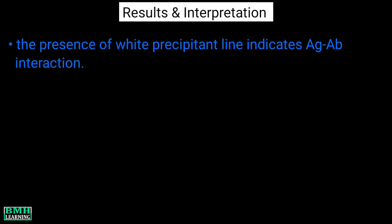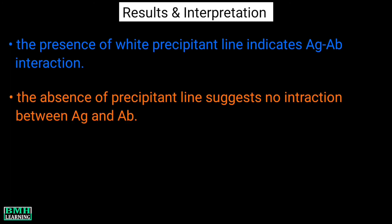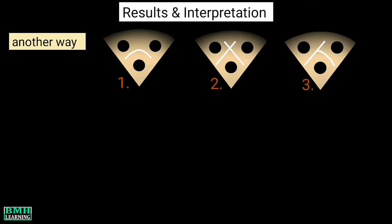Now let's talk about the results and interpretation. The presence of a white precipitant line indicates antigen-antibody interaction, and the absence of a precipitant line suggests no interaction between antigen and antibody. The more productive way to analyze the result is in the following patterns.